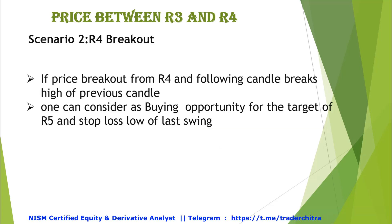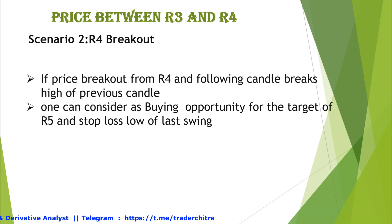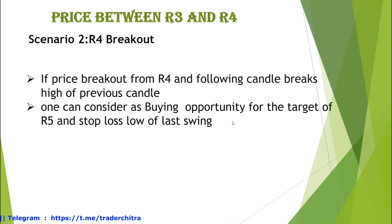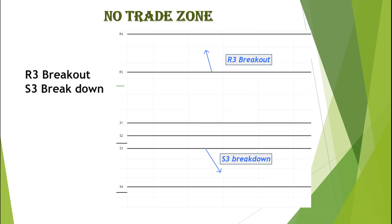Scenario 2: R4 breakout. If the price is between R3 and R4 and breaks out above R4, and the following candle breaks the high of the previous candle, one can consider it a buying opportunity for the target of R5. Stop loss is the low of the last formed swing. In this example, a green candle closes above R4 so we enter the long trade targeting R5, and that target is achieved. Note: if we get an R3 breakout or an S3 breakdown, those are considered no-trading zones.